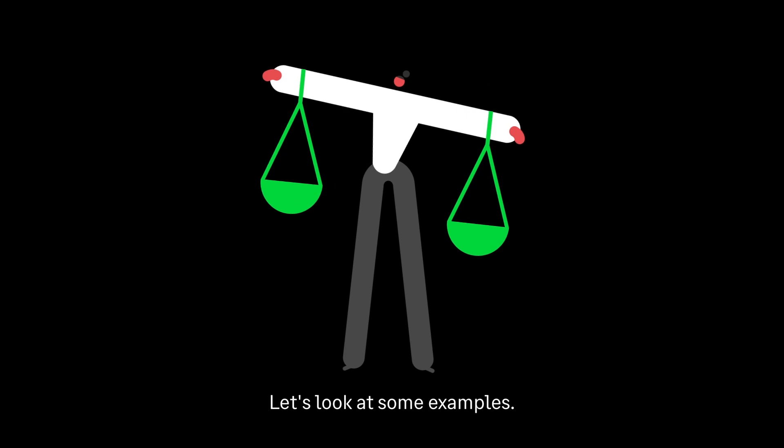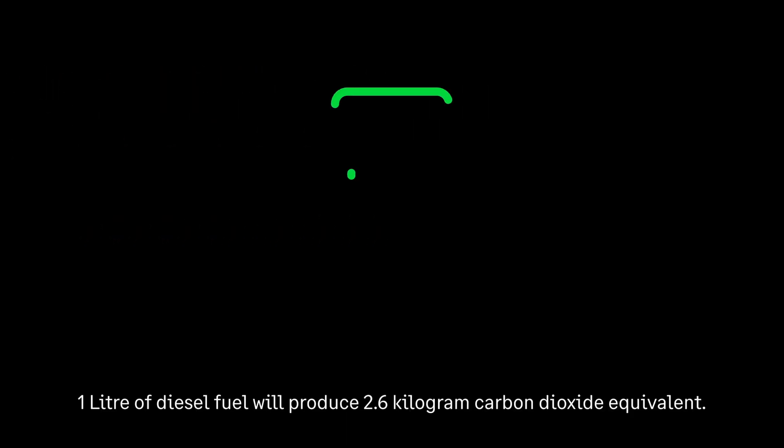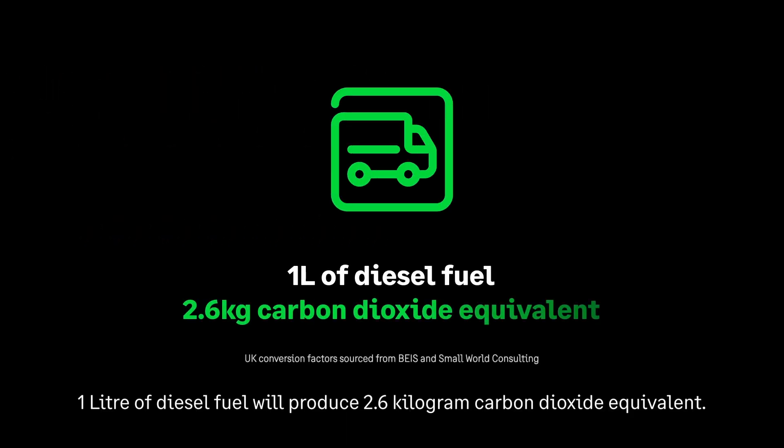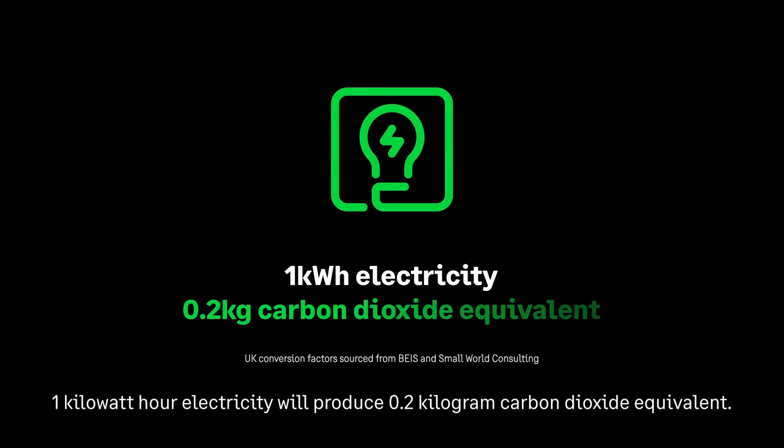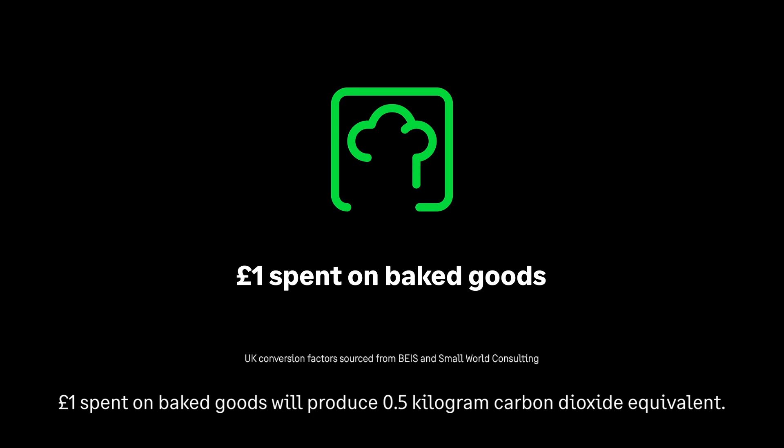Let's look at some examples. One litre of diesel fuel will produce 2.6 kilogram carbon dioxide equivalent. One kilowatt hour of electricity will produce 0.2 kilogram carbon dioxide equivalent. One pound spent on baked goods will produce 0.5 kilogram carbon dioxide equivalent.